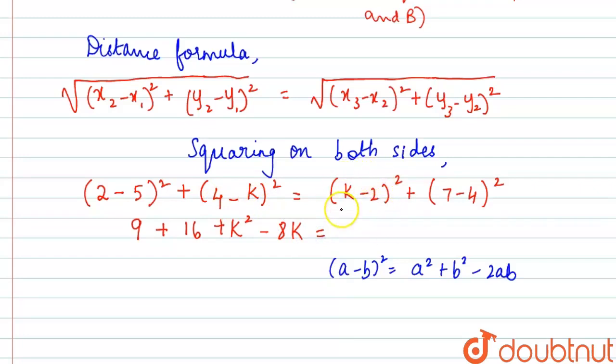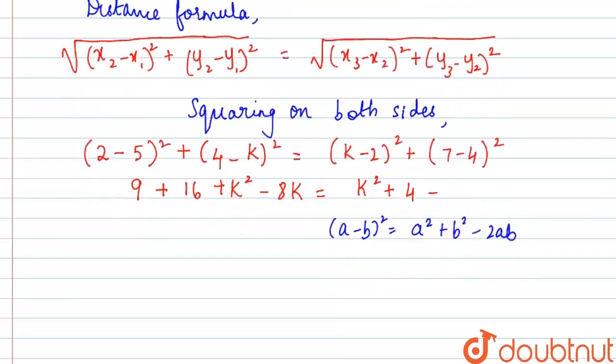This is equal to, similarly same formula we can apply for (k - 2)². So here a² will be k² plus b² will be 2² that is 4, minus 2ab will be 2 times 2 times k that is 4k, plus 7 minus 4 is 3, 3² is 9.